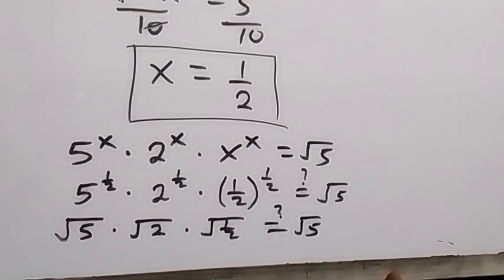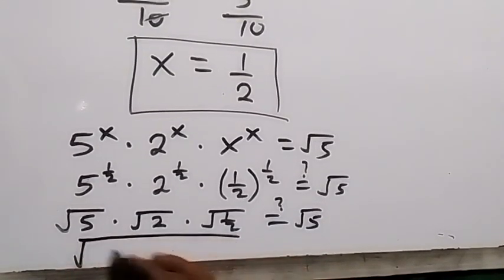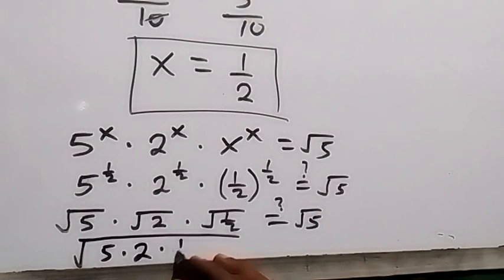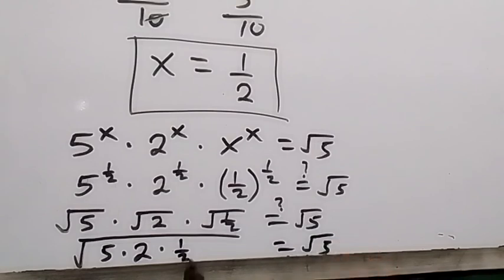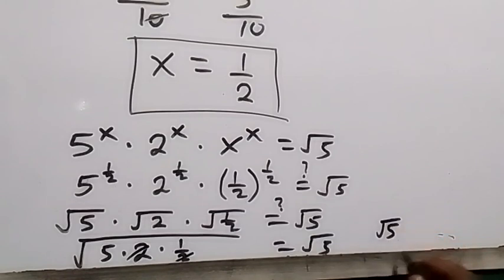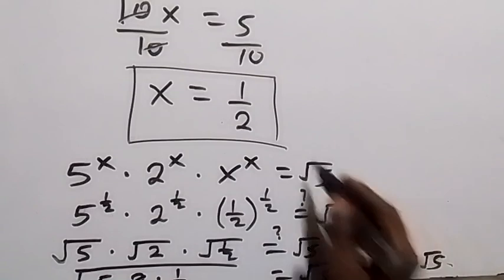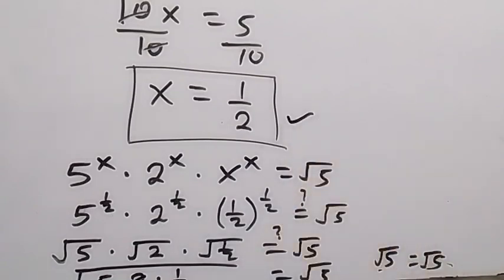We bring everything together inside one root: root of 5 times 2 times one half. This equals root 5. The one half multiplied by 2 cancels, leaving root 5 on the left hand side. So root 5 equals root 5 — the left hand side equals the right hand side. Therefore, x equals one half is the solution to this problem.